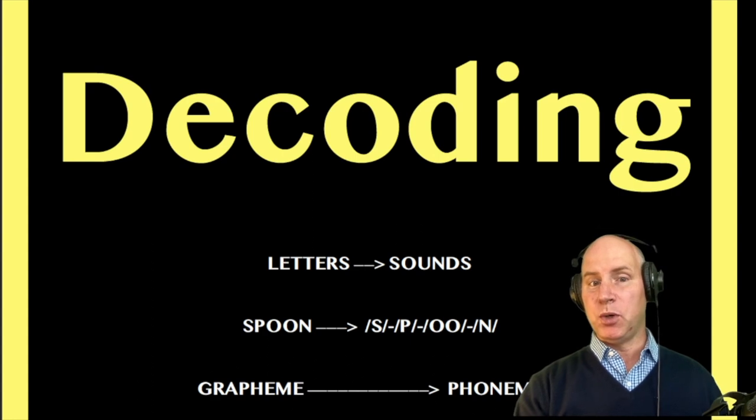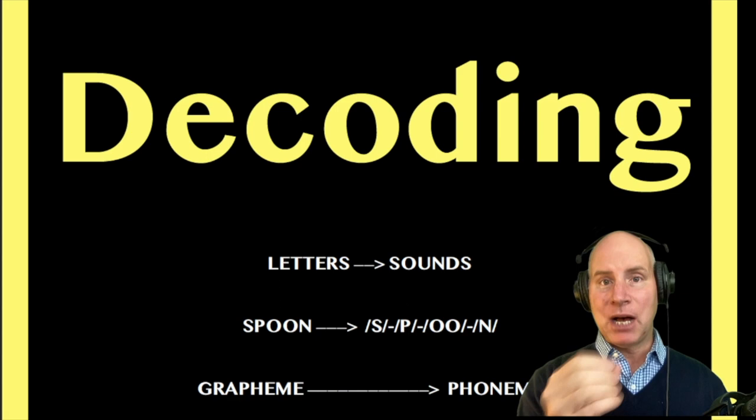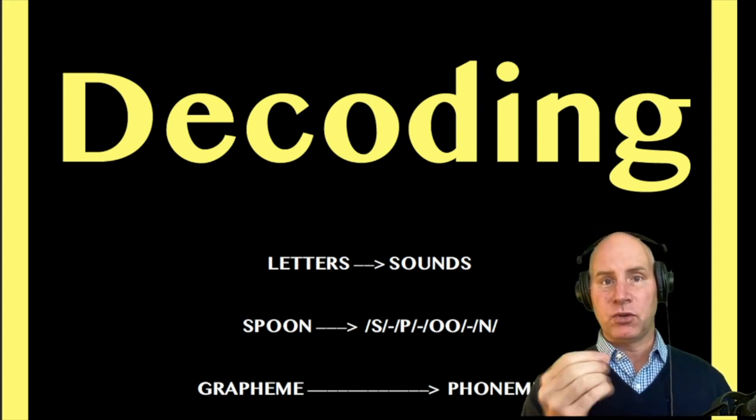Take for example the word spoon. A student comes across the word spoon in a text. They sound out each of the letters, each of the graphemes.